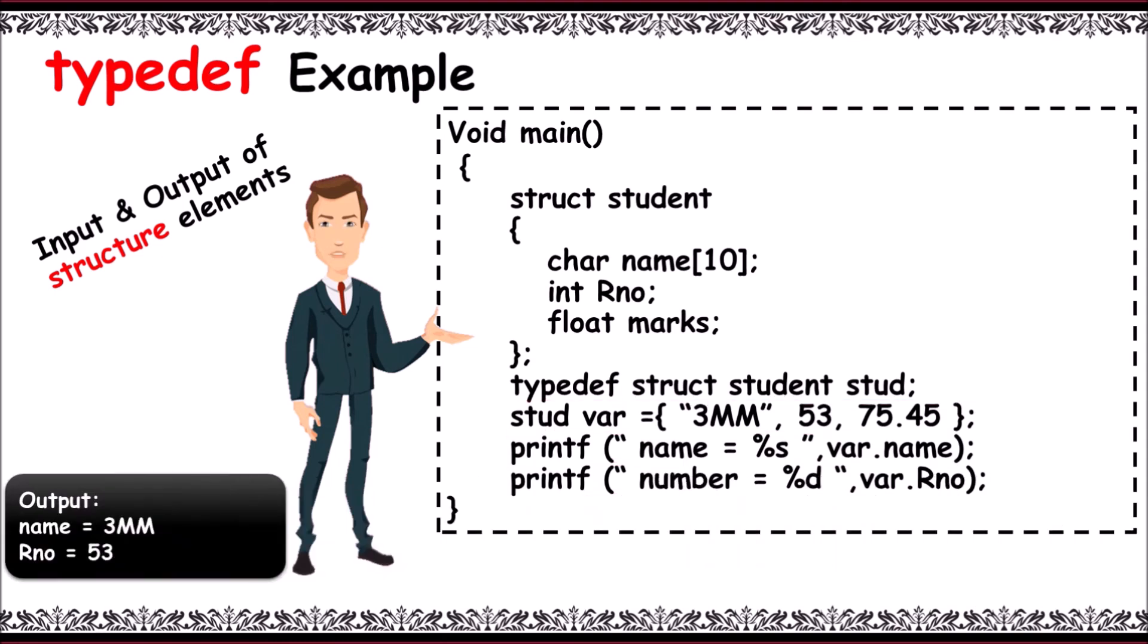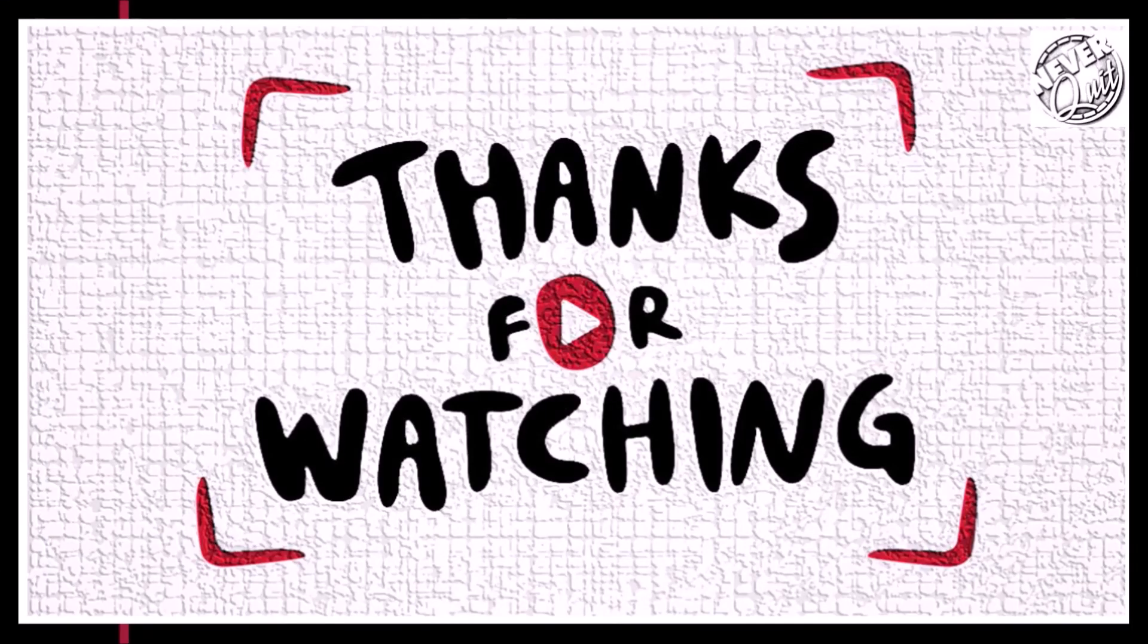That would be like 3MM name and rno is equal to 53. Thanks for watching our video.